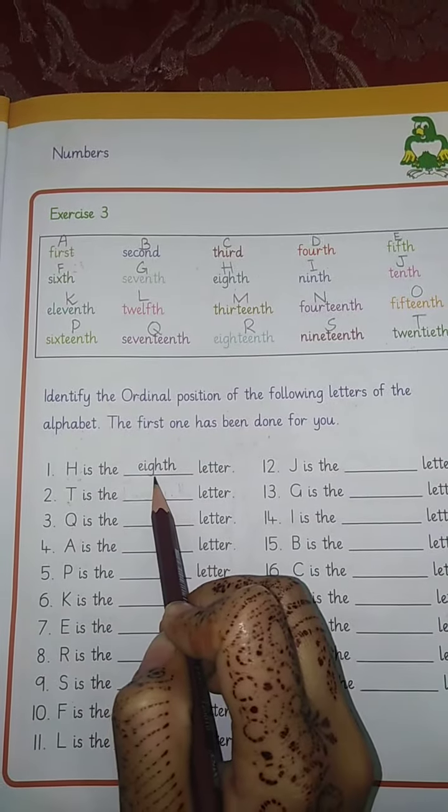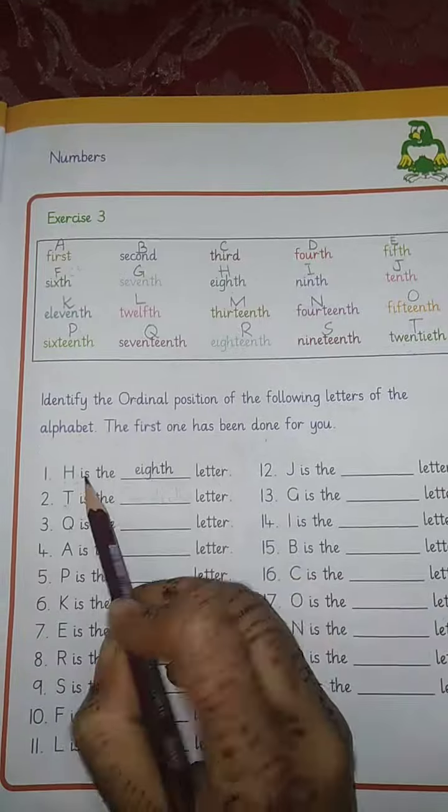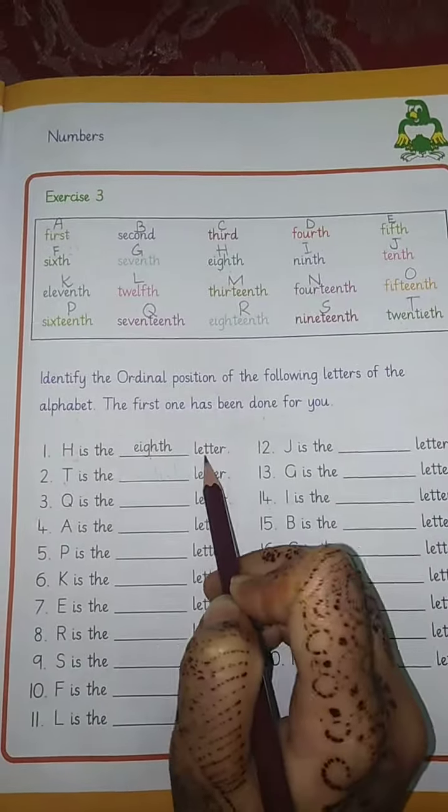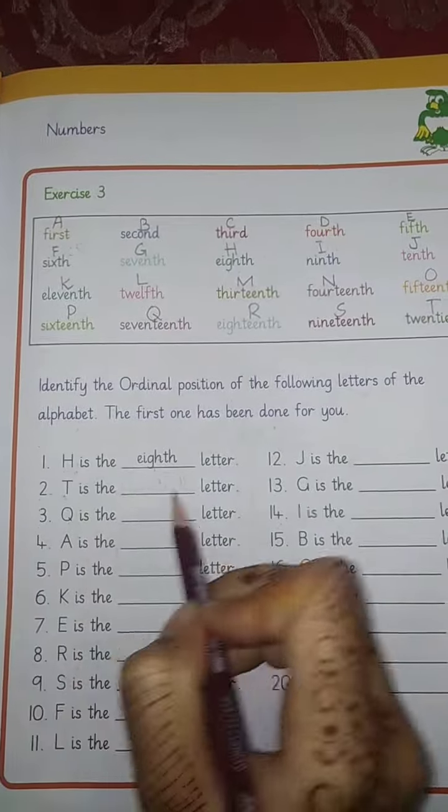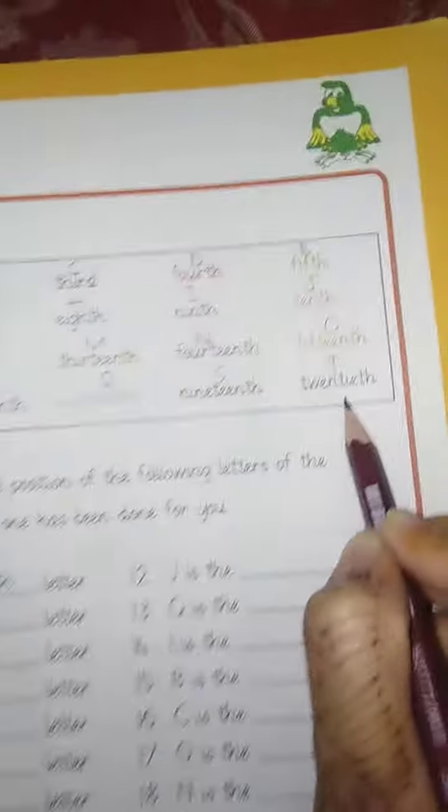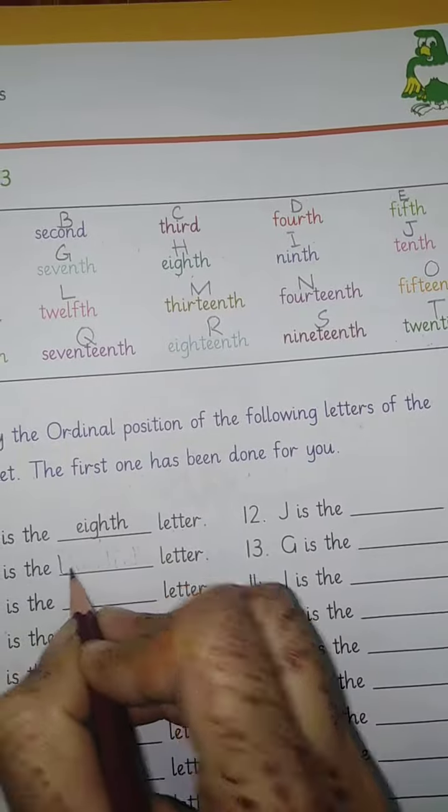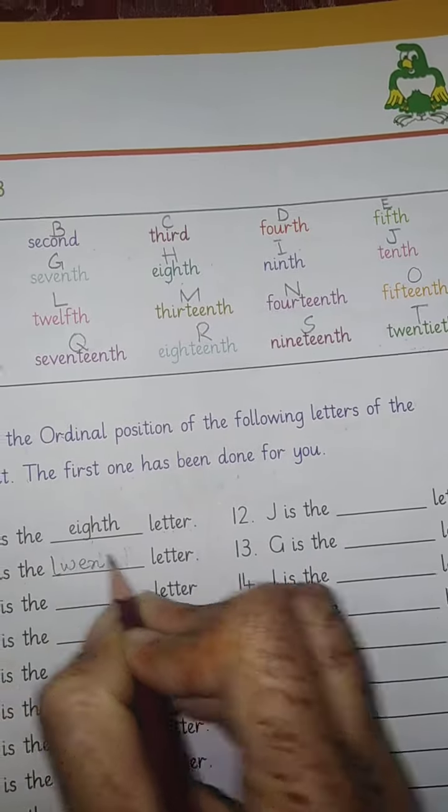H is the 8th letter, H the 8th position. We have made it eighth letter. T is the dash letter, and this is the T which is the 20th letter. We will write here 20th.